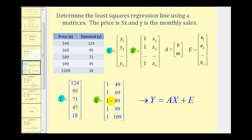Given these two matrices, we have the matrix equation y = XA + E. We won't be able to find matrix E until after we solve for matrix A and determine the errors using the regression line.